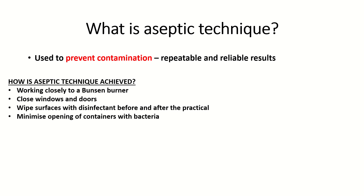Minimise opening of containers with the bacteria. Containers with the bacteria are things like the broth that you use to get your bacteria from for the experiment. This is important as it prevents unwanted bacteria from the air from getting into the container. Flame the neck of any bottles used before and after their use. By flaming the neck, this means that you're just passing the top of the bottle through the Bunsen burner flame a couple of times. Again, this ensures that unwanted bacteria are killed, so it prevents contamination.